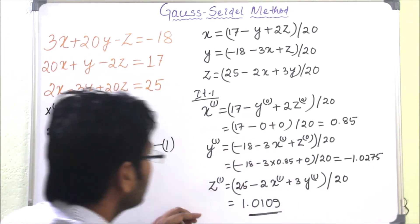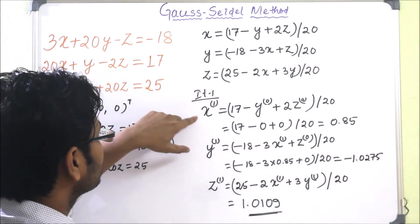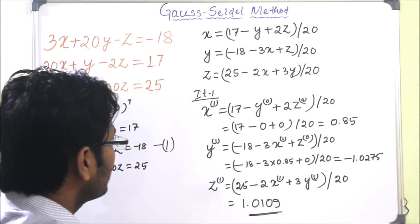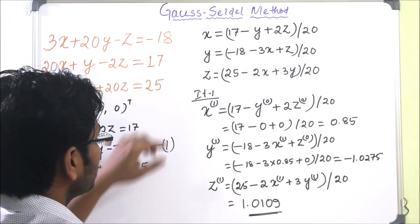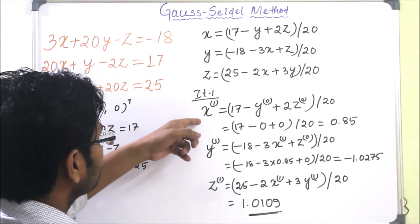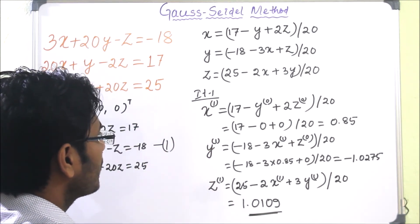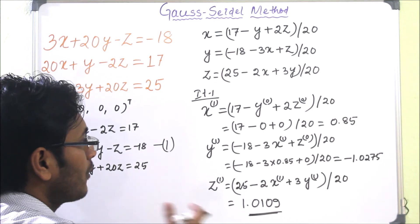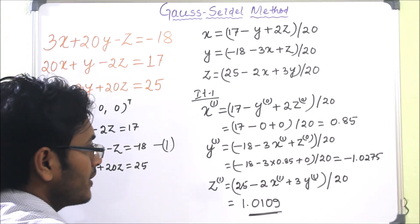So this is the first iterative values of x, y, z. Similarly, if we do the procedure, if we take this X1, Y1, Z1 value, then we can find X2, Y2, Z2 value and so on.